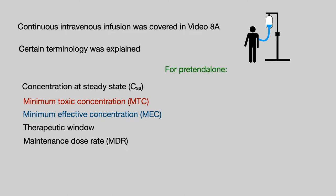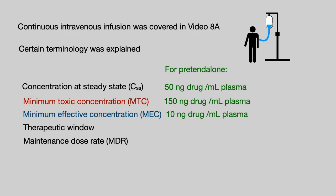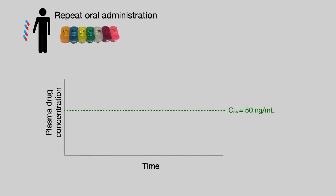We can put some values on here for Pretendalone. The steady state concentration is 50 nanograms per ml. The MTC is 150 nanograms per ml. The MEC is 10 nanograms per ml. Having clarified these terms, we can now look at the design of repeat dose oral administrations.